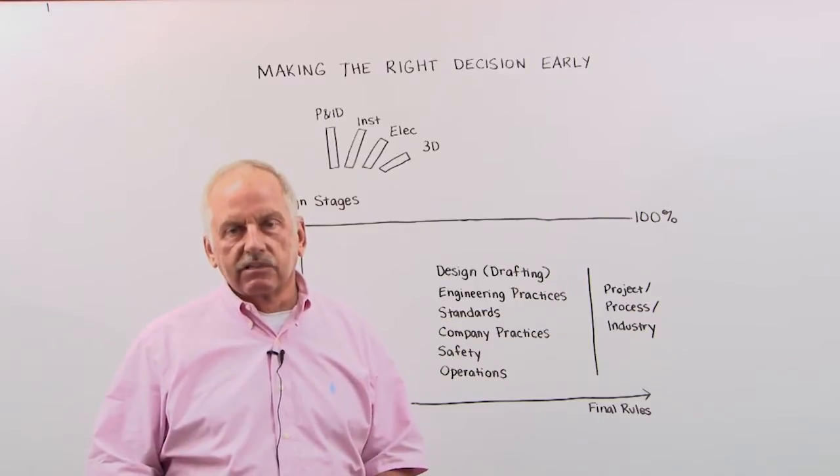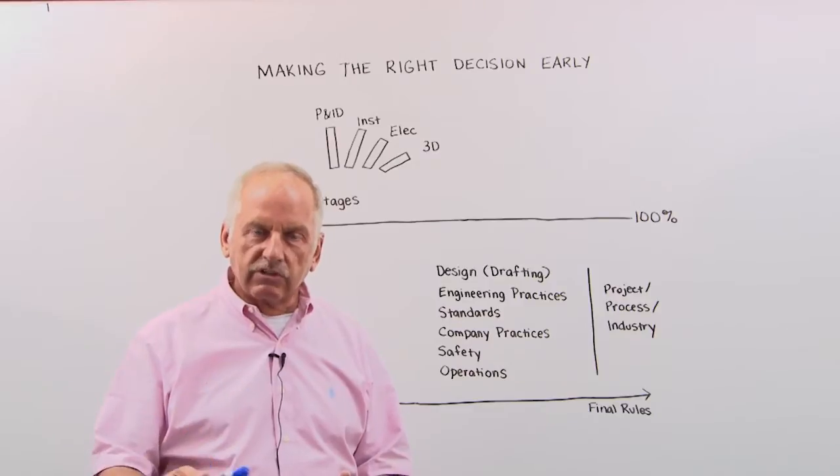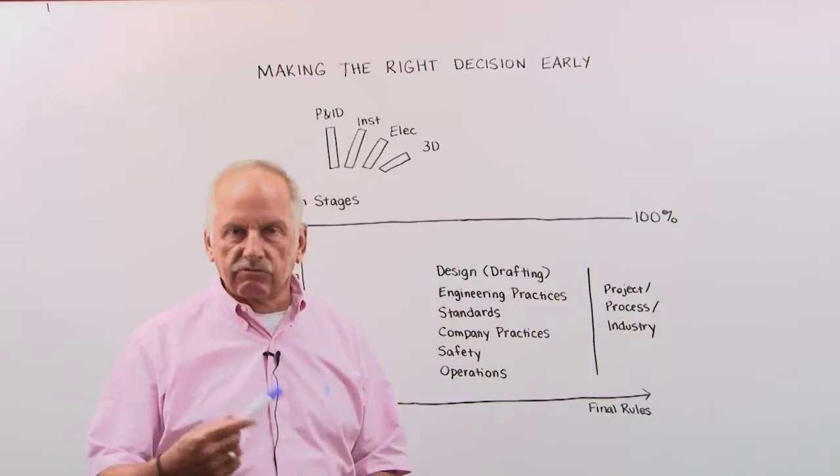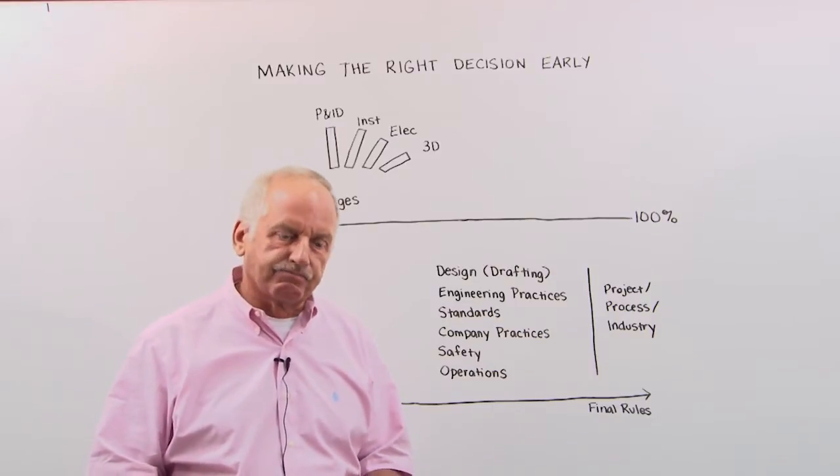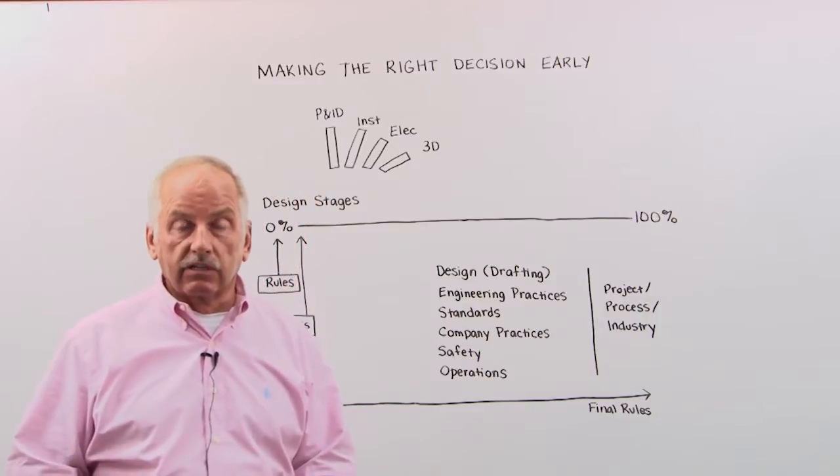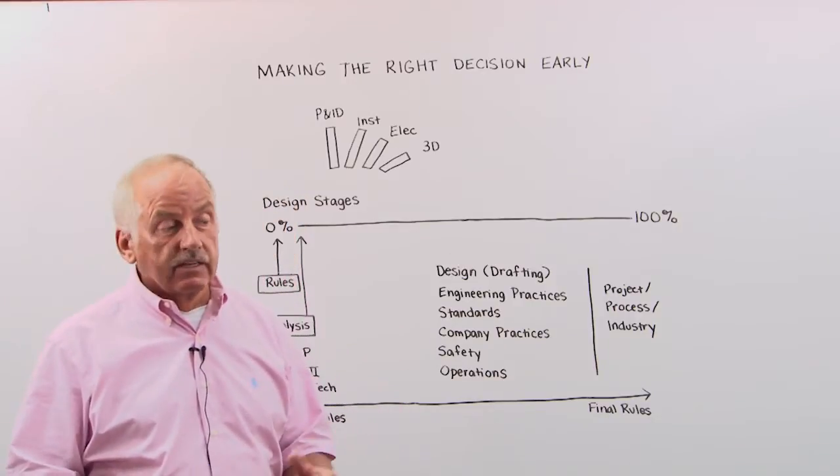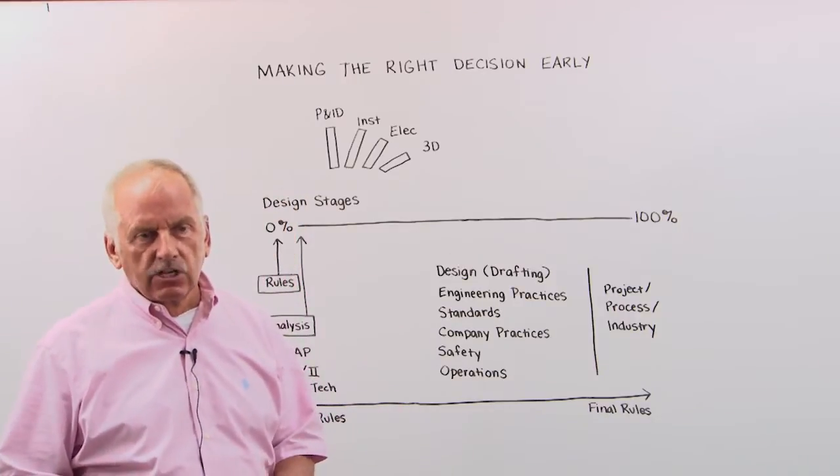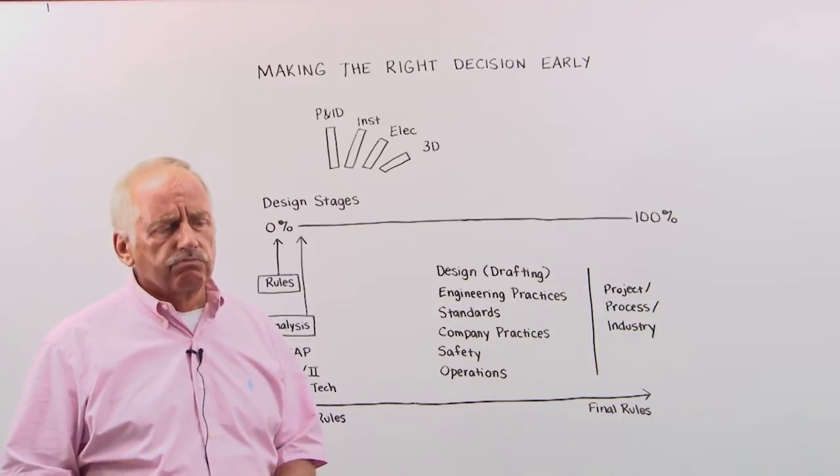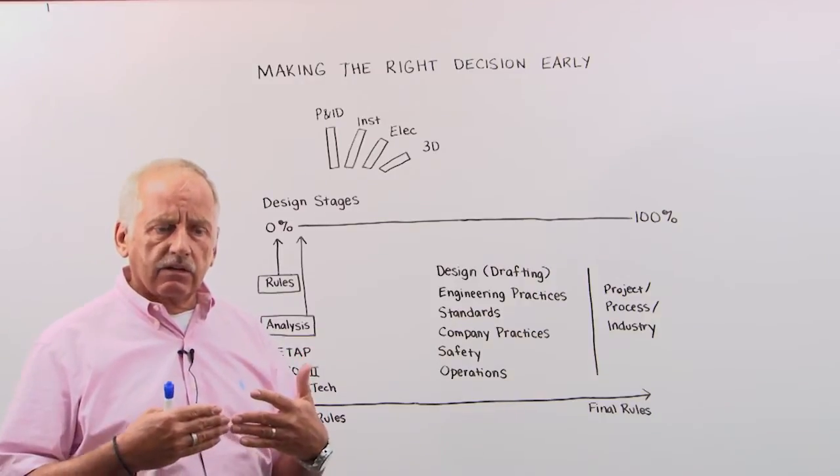But still, you want to minimize the changes that you make as changes come in from not only design changes, but you get information from vendors, from the field, from the client, from the owner operator. Because every change will cause a lot of hours and a lot of work to be done. Well, if it's cost plus, maybe not a problem. If it's lump sum, you definitely want to minimize that. So how can we change engineering and make the process more productive and faster?